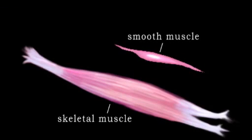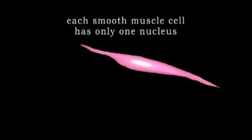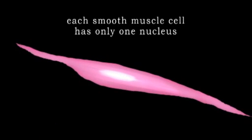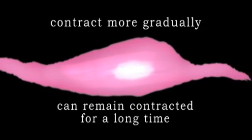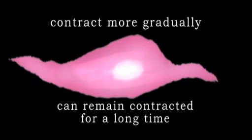Smooth muscle cells look different and act differently from skeletal muscle tissue. They are shorter than skeletal muscle cells, and each smooth muscle cell has only one nucleus, like most of the other cells in our body. In general, they contract more gradually and can remain contracted for a long time. Smooth muscle cells often operate in groups — when one is stimulated to contract, usually all the surrounding cells will contract as well.